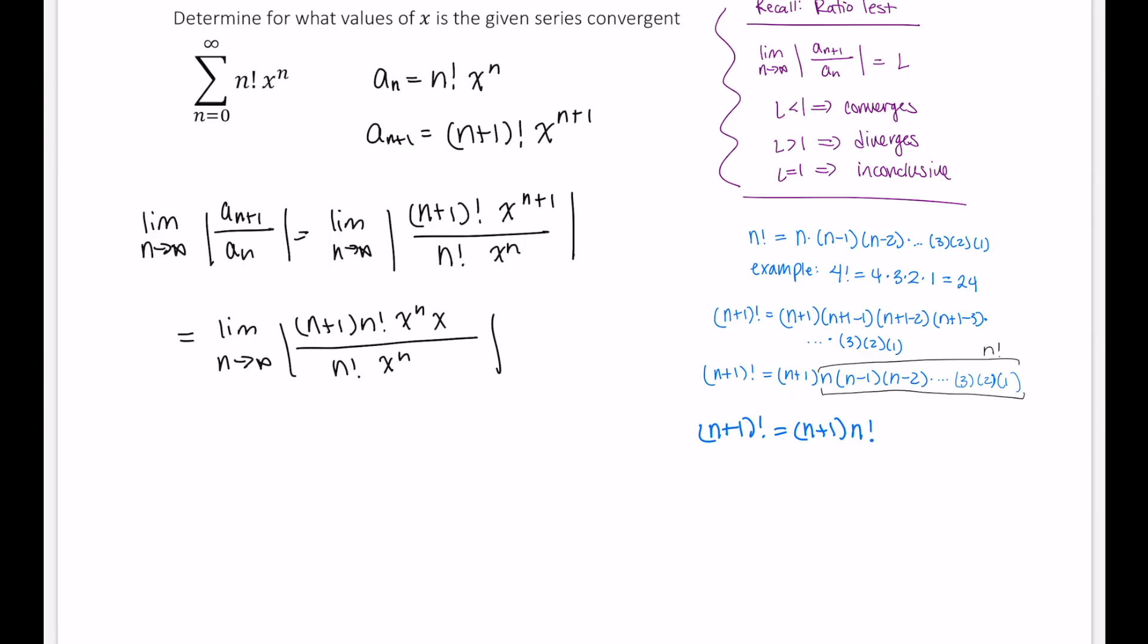Okay, so we have some things that cancel. Remember, that's slang in this case for division, because right now everything is being multiplied, and the opposite of multiplication is division. So let's cancel. x to the n's cancel, because x^n divided by x^n is 1. Similarly, n factorials cancel, because something divided by itself is 1. So we end up with the limit as n approaches infinity of (n+1) times x.